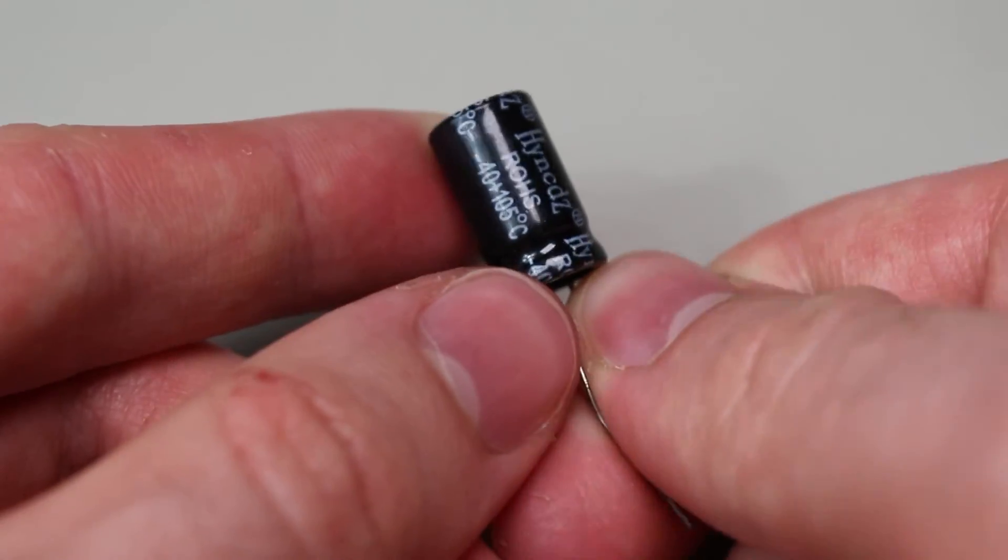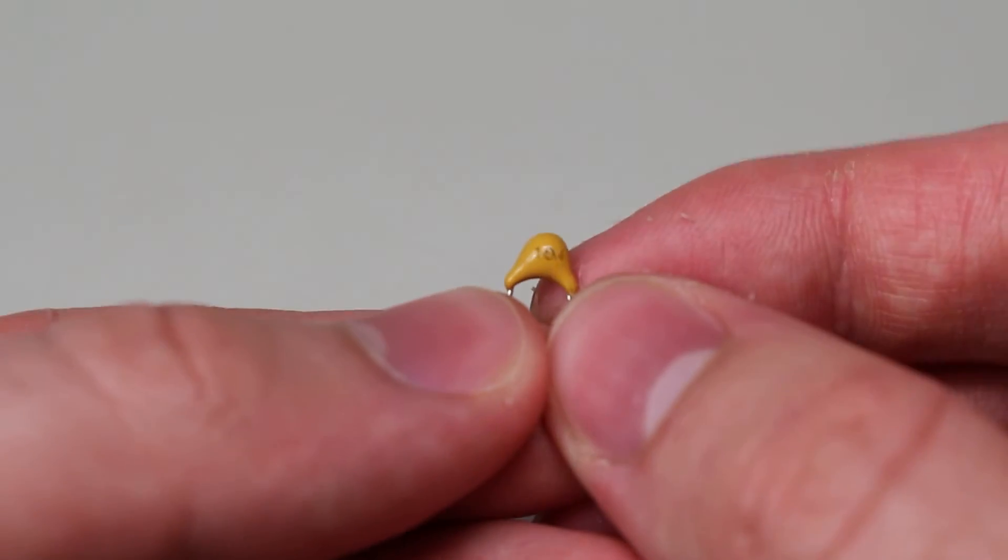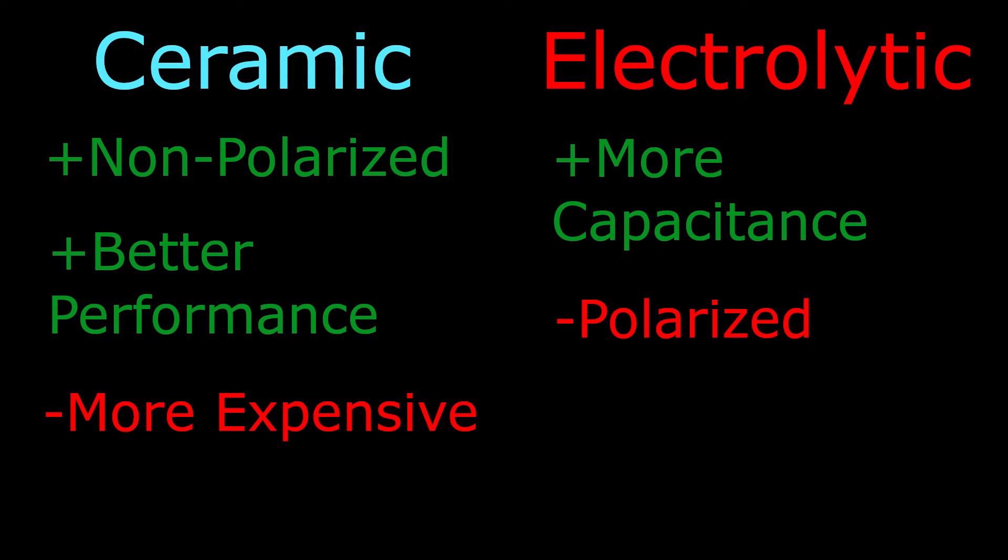You may be wondering why anybody would pick one type over another. Well, ceramic is non-polarized and has better performance than electrolytics. Its weakness is, though, that they are more expensive and have lower capacitances. Electrolytic, on the other hand, is worse performing, but has higher capacitances for a lower price. So, you'll have to weigh these factors together to find out which capacitor you will need for your project.